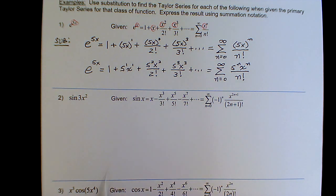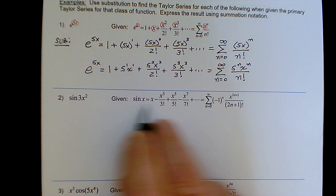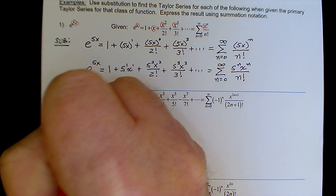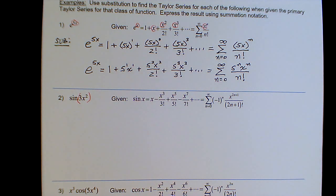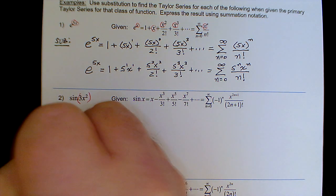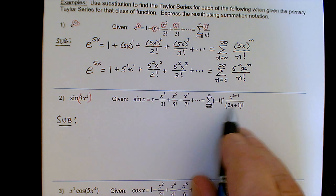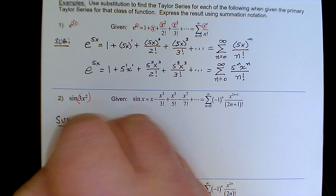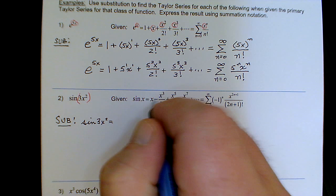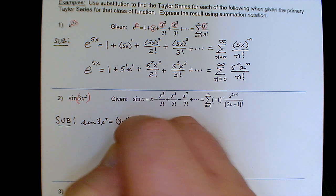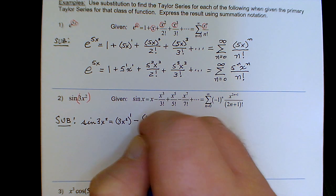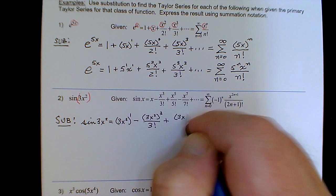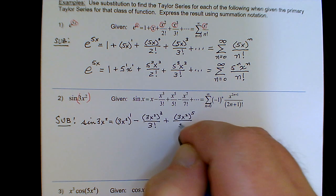If we're told to use substitution — here we're given the primary formula for sine of x, whereas for sine of 3x squared, if you put parentheses around 3x squared, that's the argument of sine of x. Upon substitution, it replaces all the x's in our polynomial and summation notation. So sine of 3x squared equals: 3x squared to the 1st, minus 3x squared quantity cubed over 3 factorial, plus 3x squared quantity to the 5th over 5 factorial, minus 3x squared quantity to the 7th over 7 factorial.